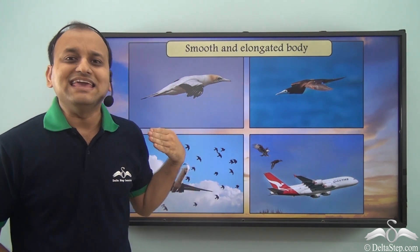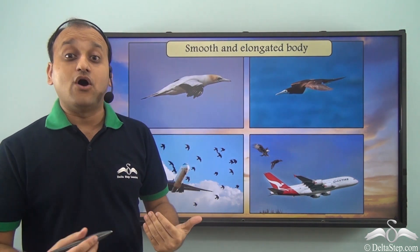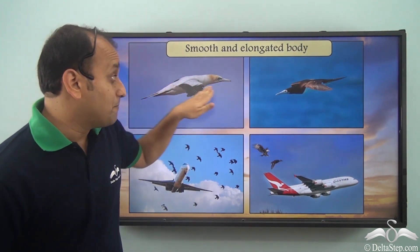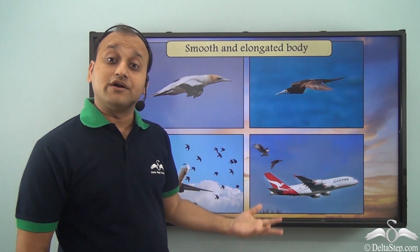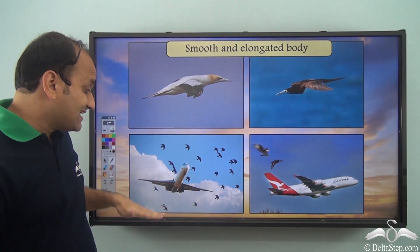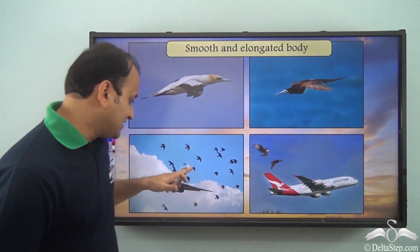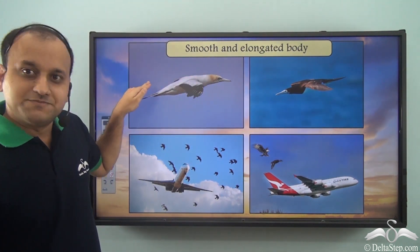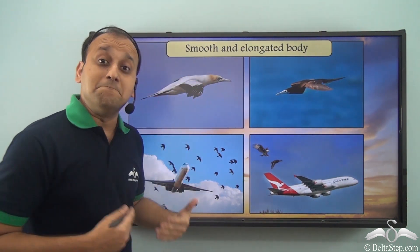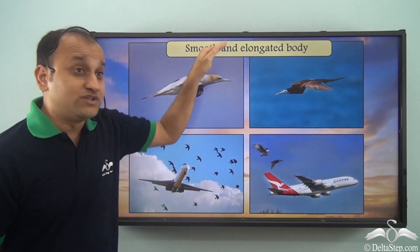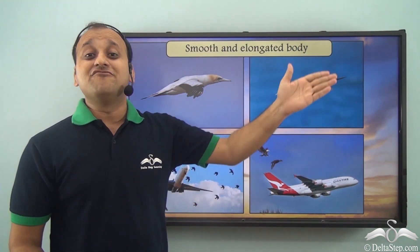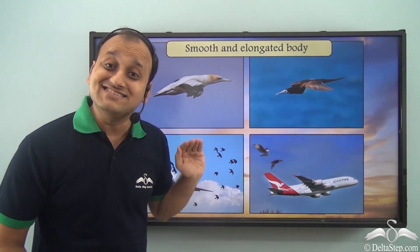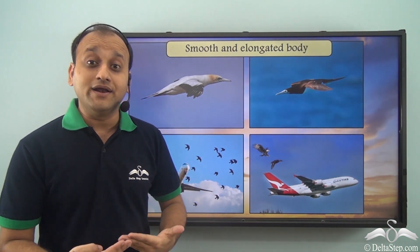Apart from hollow bones, birds also have a smooth and elongated body. Because of this smooth and elongated body, they can easily cut through the air and fly without much resistance from air. Because of this advantage, even our airplanes are modeled just like birds' bodies — smooth and elongated. Can you see how these airplanes are very similar to the bodies of these birds? That's why even our airplanes can easily fly in the air, because they are modeled on birds' bodies.